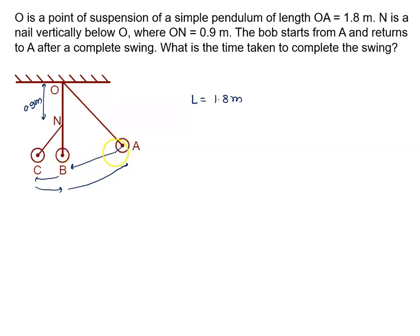In A to B and B to A, the major length is involved. In B to C and C to B, the smaller length is involved. The difference is exactly half - one length is 0.9 meters and the other length is 1.8 meters.